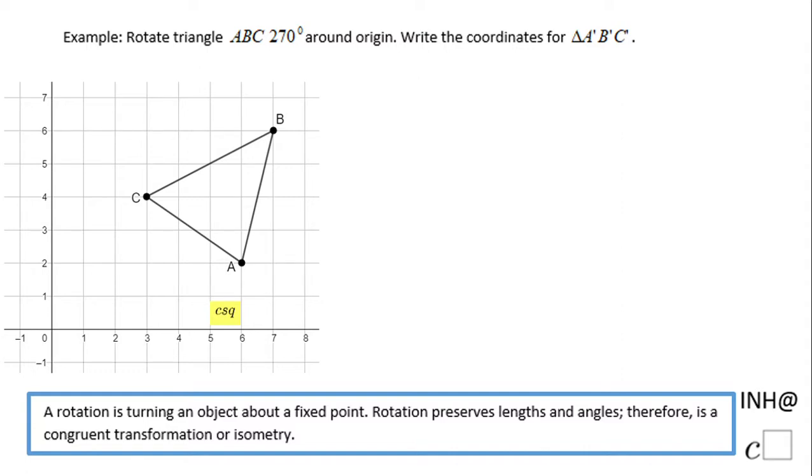Welcome! Here at C Squared, in this problem we're going to look at how to rotate triangle ABC 270 degrees. This is counterclockwise - nothing mentioned, so this should be counterclockwise around the origin, which